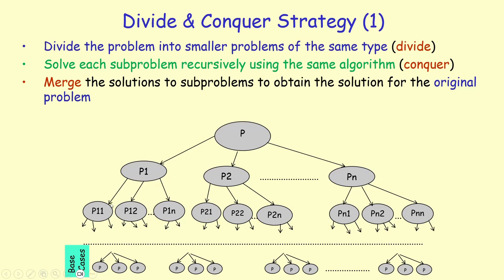Eventually, each of these sub-subproblems will be divided further. As we divide these problems further and further, we will eventually reach a point where the problem is so small that we don't have to divide it any further — the solution is obvious. These are called base cases or stopping conditions. Once we have solutions to these tiny subproblems, the merge part starts: we backtrack from the recursion, merging solutions to obtain solutions to bigger problems.